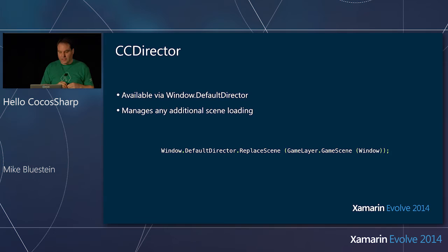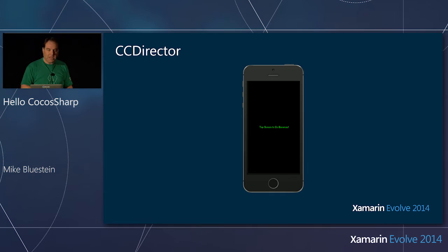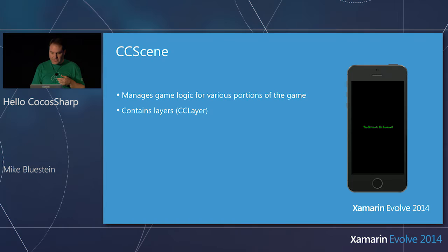The API for the Director is a little different from other Cocos2D implementations, where they typically have it as a singleton. We have it available off of the window class — it's a little more object-oriented. The simple line of code is to replace the scene: go through the window's default director and replace a scene. The scene manages what's on a particular screen.